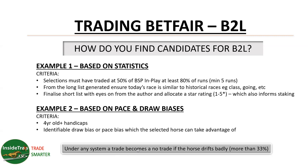Under any system you use - mine or your own - a trade becomes a no-trade if a horse drifts badly. There's nothing worse than a horse that was 4.0 in the morning and comes to the race at 8.0. When a horse drifts that badly, someone knows something you don't. A drift of more than 33% is where you say no, I'm not going to bother with this trade.